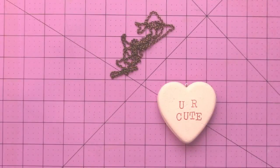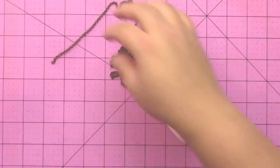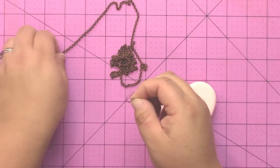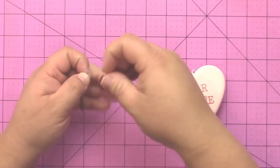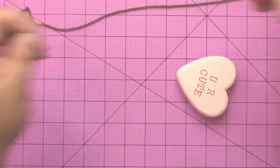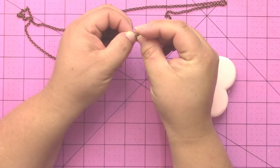Next, you're going to use a jump ring, or you can use a clasp to close off your chain. Because my piece of chain is really long and it will fit over my head, I'm just going to use a jump ring to close the chain onto itself to make an actual necklace.